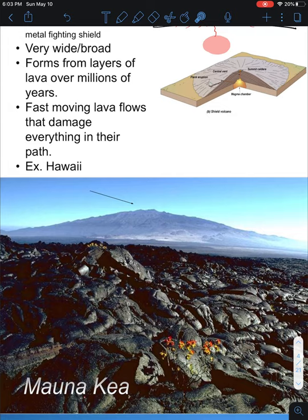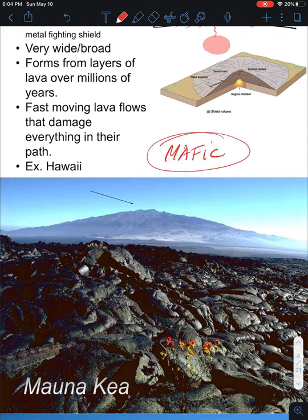The unique thing about shield volcanoes is that they produce lava — they do not produce gray eruptions, which are the ones with big giant clouds that shoot rock into the atmosphere and block out sunlight. That would not happen with this type of volcano. The reason is because of the type of magma: shield volcanoes have mafic magma, and mafic magmas produce dark, iron-rich and magnesium-rich rocks.